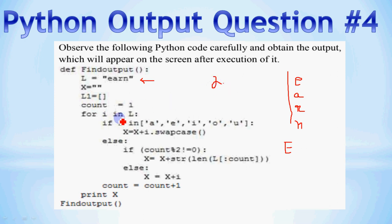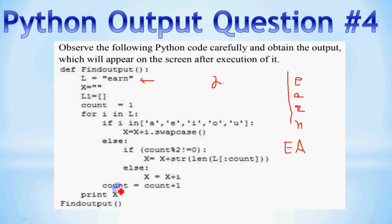Now the loop runs for A. For I in A — A is in the vowels list [A, E, I, O, U], so the condition is true. Swapcase means x will be concatenated with capital A. A was small, so it becomes capital. Count changes from 2 to 3. So count value is now 3.